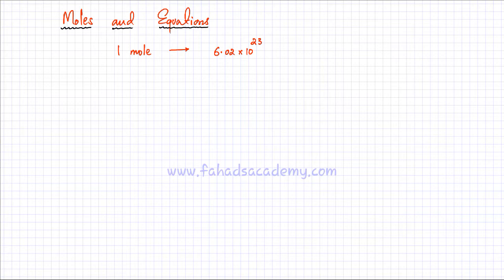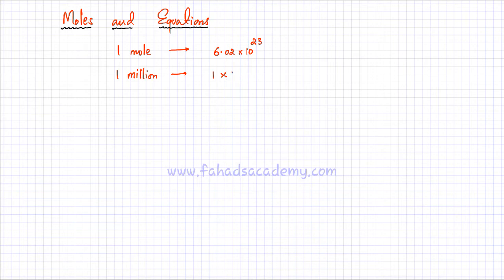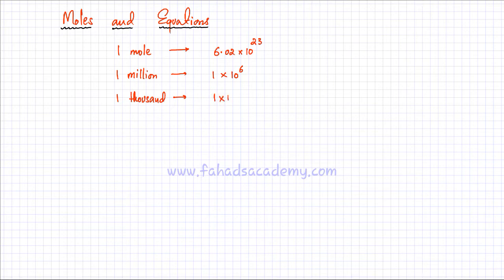We can't use million because a million would be a very small comparative unit. A million is another unit for counting, but a million only stands for 1 × 10⁶ — that's 1 followed by 6 zeros. That's a very tiny number when you're counting atoms. Similarly, you can't count them using a thousand, which is just 1 × 10³, or 1 followed by 3 zeros. So it's going to be a very small number — you wouldn't be counting atoms that way.